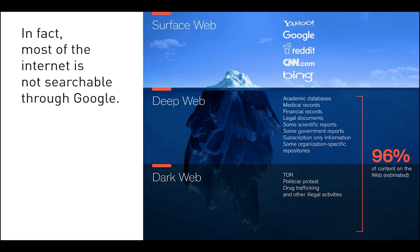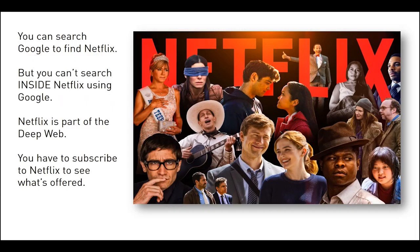Some resources, like medical records, are private and cannot be accessed by the public. Others you can pay to access, but that doesn't mean a search engine can find what's inside. For example, you can search Google to find the website for Netflix, but you can't search inside Netflix using Google. Netflix is part of the deep web because it's behind a locked door, and the only way to open it is to subscribe.